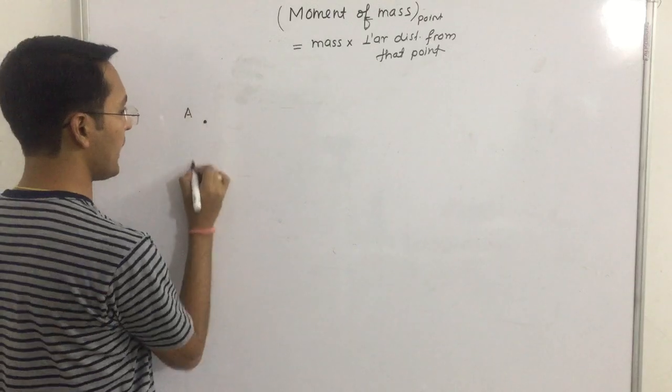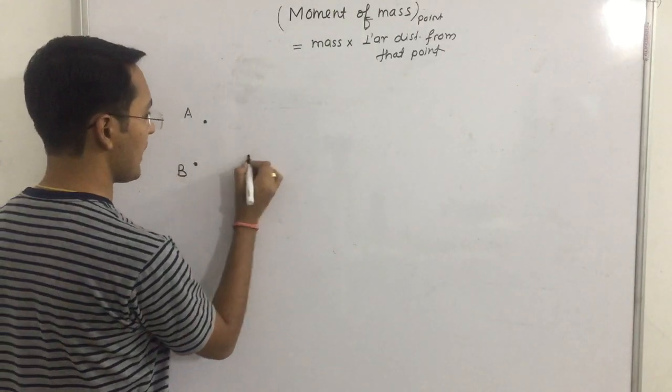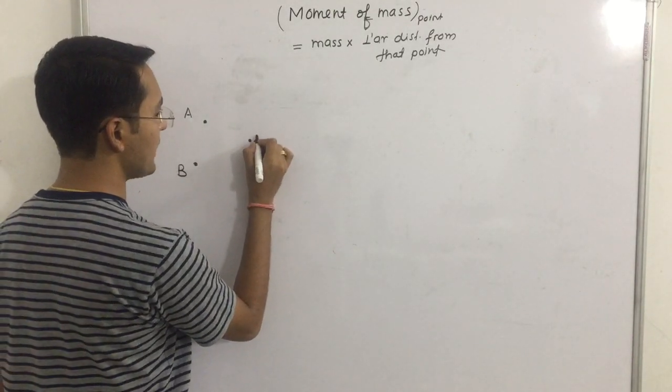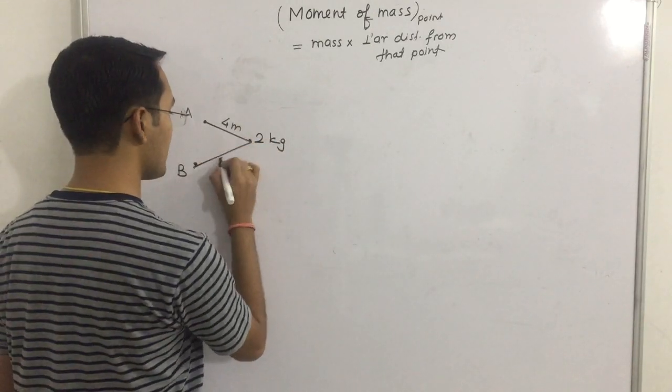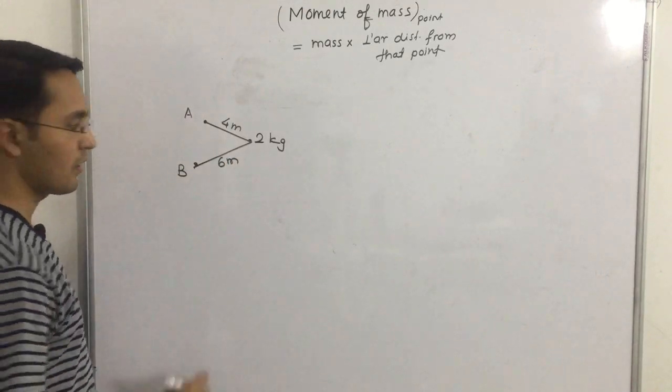For example, A and B, these are two points. This mass is 2 kg. This distance is 4 meters and this distance is 6 meters.